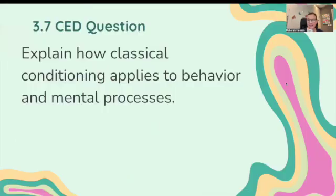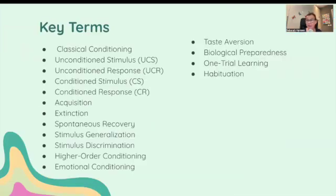We're going to start off by looking at the CED question for 3.7. I've done a separate video completely on the essential knowledge to answer this question, so that's a different video. This is just the key terms. The question was: explain how classical conditioning applies to behavior and mental processes. There are a whole bunch of key terms to go with this section of unit three, and we're going to go through each one with a definition and an example.